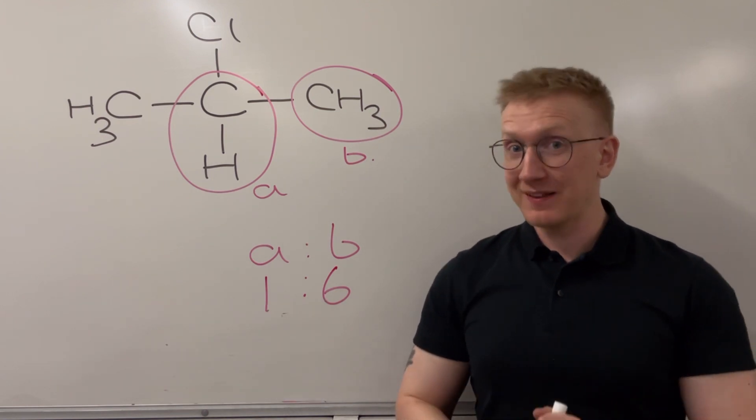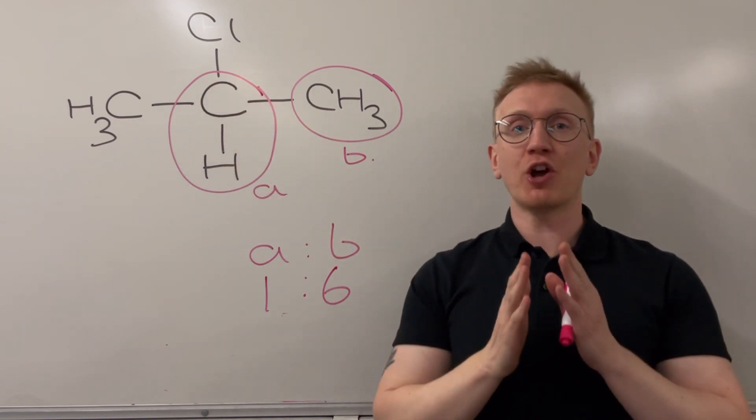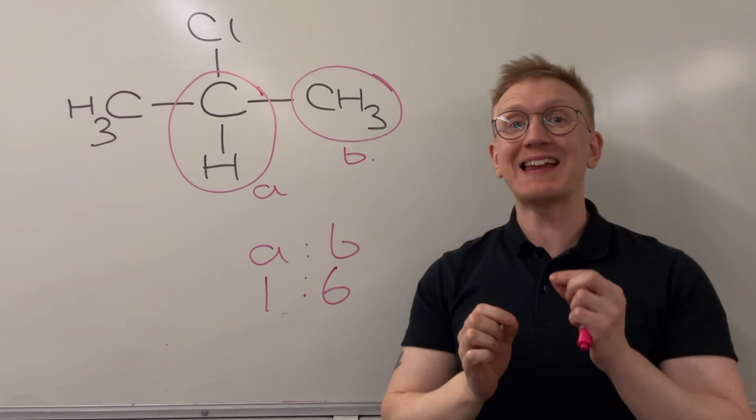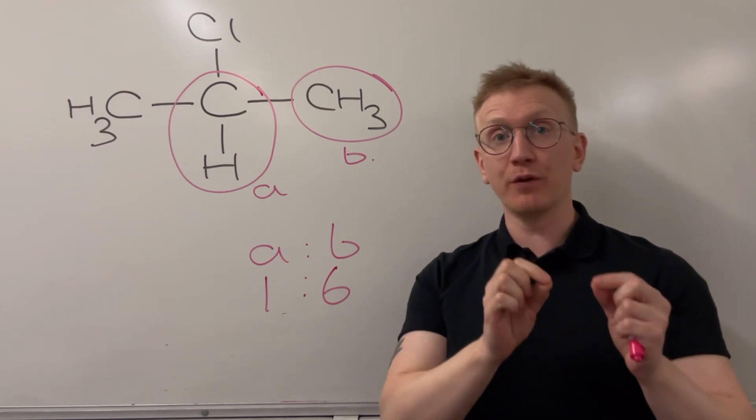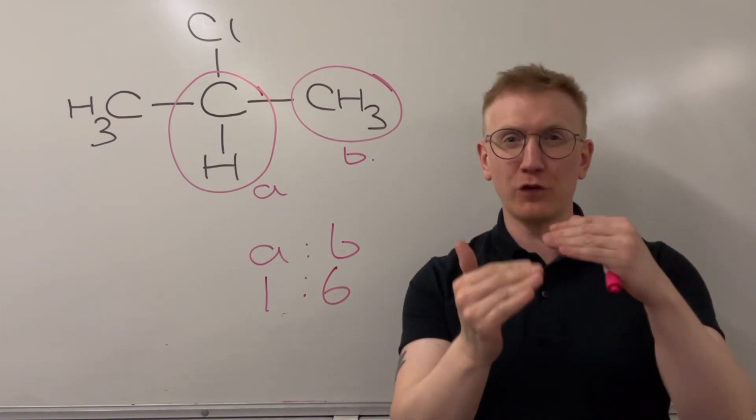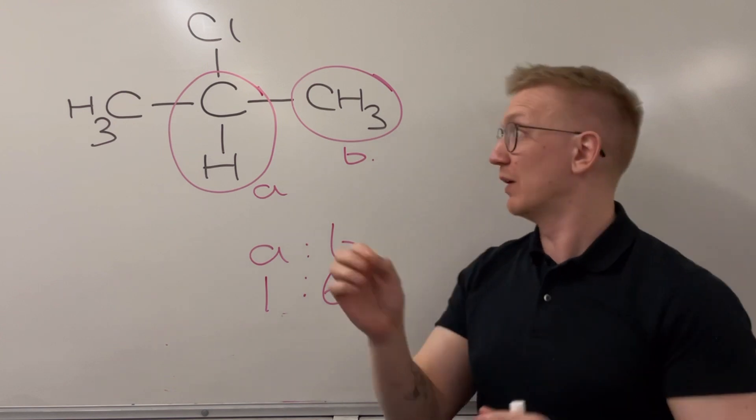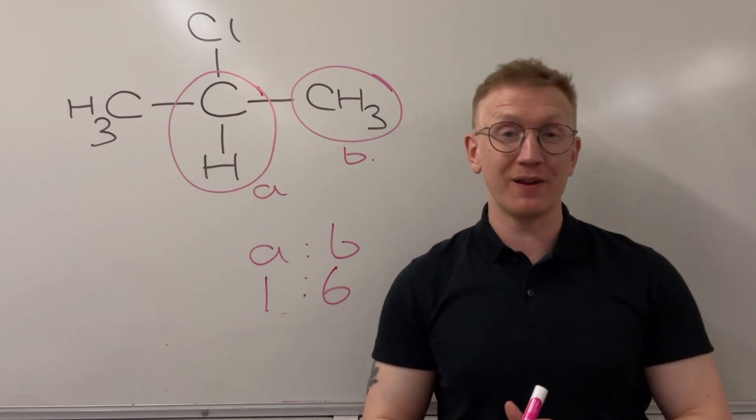Now for predicting the splitting pattern, what I'm going to do is start from an environment, and then I'm going to go up to the next carbon and count the number of neighbouring hydrogens there. At that point, I'll then implement the N plus 1 rule, and that'll tell me what the splitting pattern is, how many sub-peaks my peak goes into, for my individual environment. And I need to do each individual environment separately.